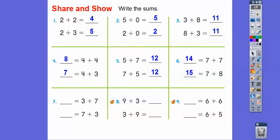3 + 7. Let's do this one. 7, 8, 9, 10. So these both are 10. 9 + 3, 3 + 9. 9, 10, 11, 12. So those are both 12.